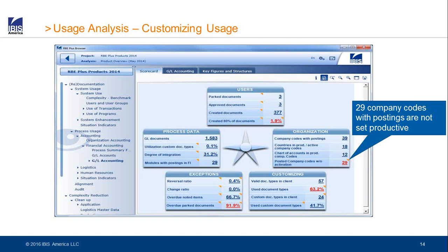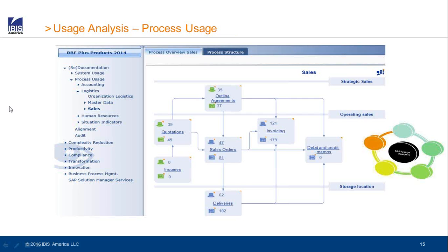Is there more high-level information available? Maybe which processes are used and how intensively? Yes — we also have process flow diagrams and provide a drill-down into the details. This is an example from the sales area. It shows you the key features in the sales area: are we using inquiries, are we using quotations? We also show process variants in our statistics. We can map those processes to best practices or to the business process repositories from SAP Solution Manager.